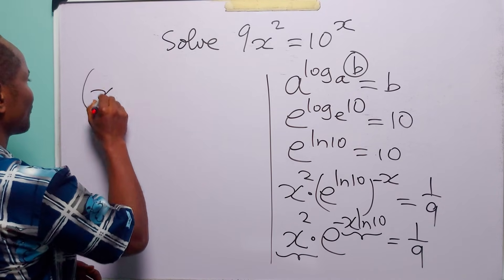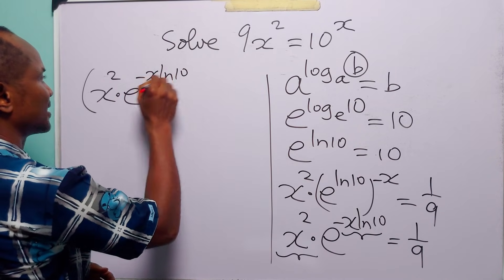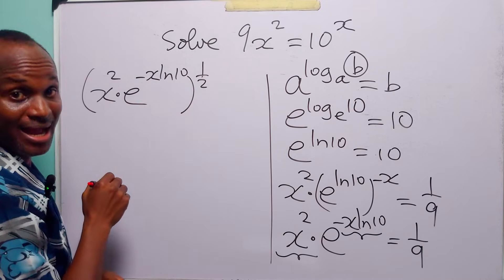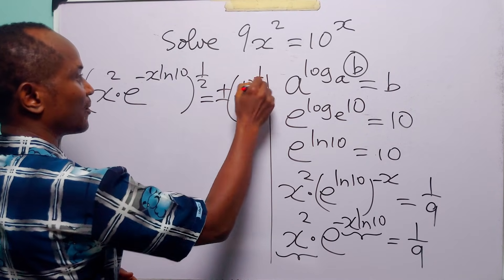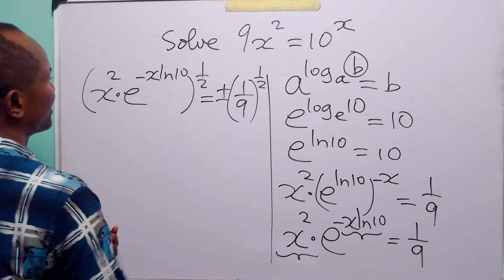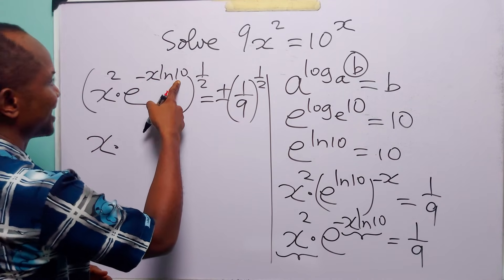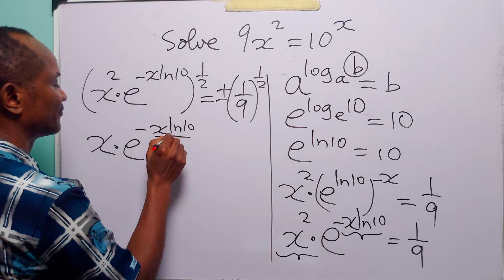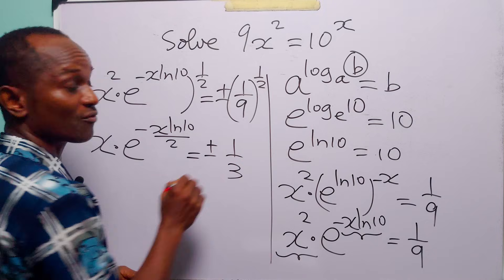We have that x squared times e to the power minus x ln 10, all to the power one half for the square root, is equal to plus or minus 1 over 9 to the power one half. To get rid of the brackets, we multiply the powers: 2 times one half is 1, and minus x ln 10 times one half is minus x ln 10 divided by 2. This is equal to plus or minus 1 over 3.